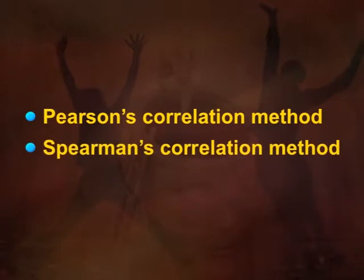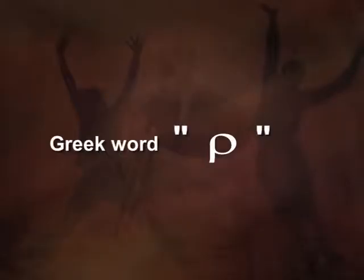Correlation can be done through various correlational methods, but the two methods we are going to talk about today are called the Pearson correlation method and Spearman's correlation method. Pearson product-moment correlation method identifies the relationship between two or more variables and is denoted by a small r, whereas Spearman correlation method is represented by the Greek symbol rho. They both help us to find the relationship between two or more variables.